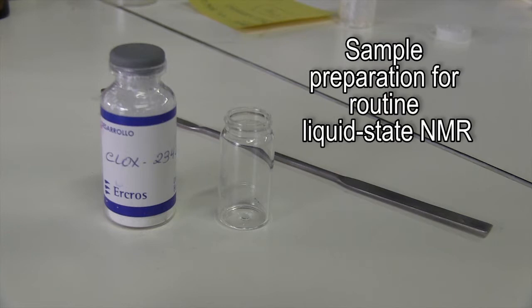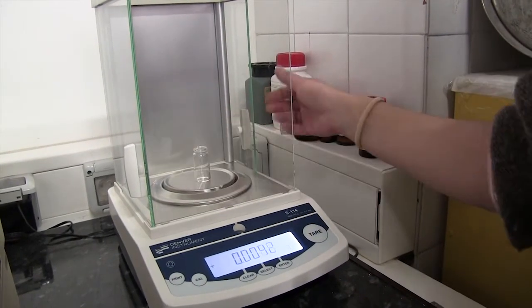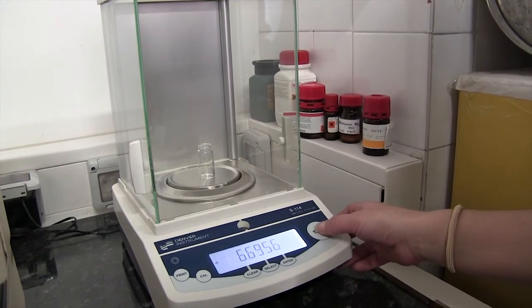The first thing we need is a sample. It can be either solid or liquid. In this case, our sample is a solid. Using a balance and a vial, we are going to weigh a small amount of the sample.